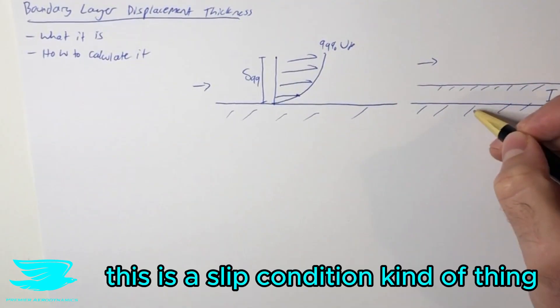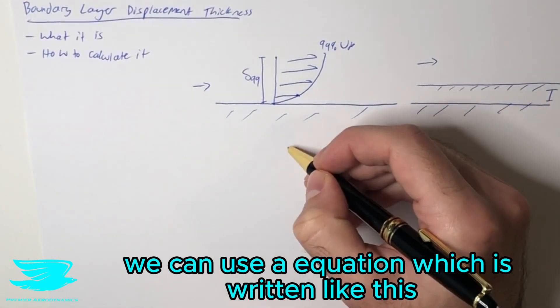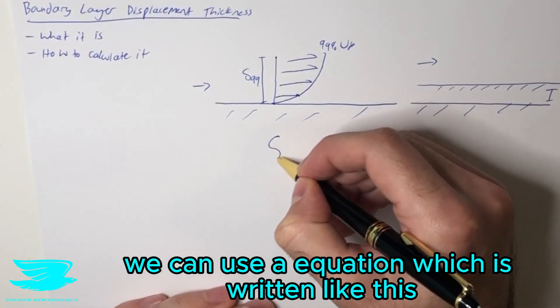So in other words, it's inviscid, this is a slip condition kind of thing. Well, in order to figure out what that distance is, we can use an equation which is written like this,